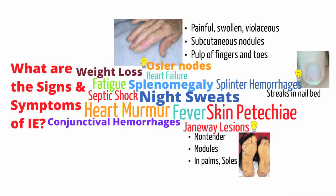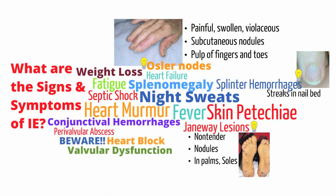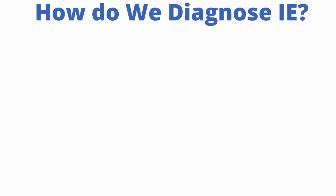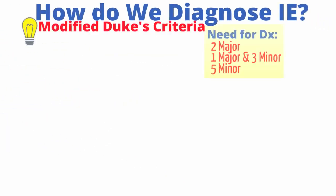Unfortunately, infective endocarditis can have significant complications. One of these is paravalvular abscess, which can lead to heart block and valvular dysfunction. An abscess is a collection of pus — I've seen patients go so bad with these abscesses that they've required transcutaneous pacing. In addition, with left-sided infective endocarditis, there is a very real possibility of stroke. In patients with stroke symptoms, persistent fevers, and a heart murmur, infective endocarditis should be considered.